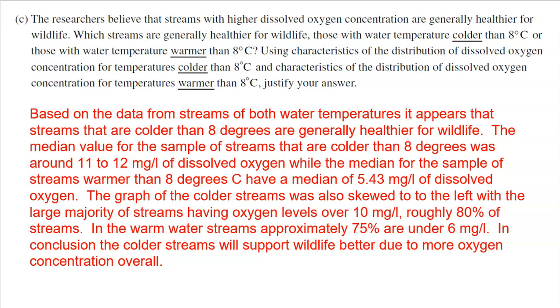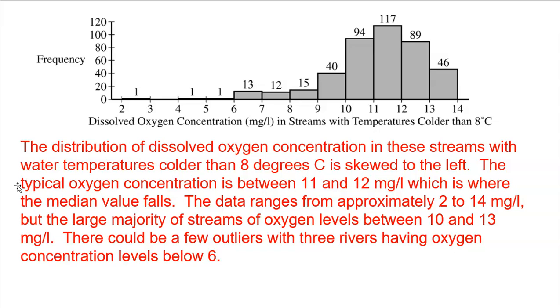Now I also used the shape. So I said the graph of the colder streams was skewed to the left. Now what that means is that the majority of streams are on the high side, somewhere over 10 milligrams per liter, roughly 80% of streams. I actually went back to the histogram and looked at where the majority of data is. This represents roughly 80% of all streams.